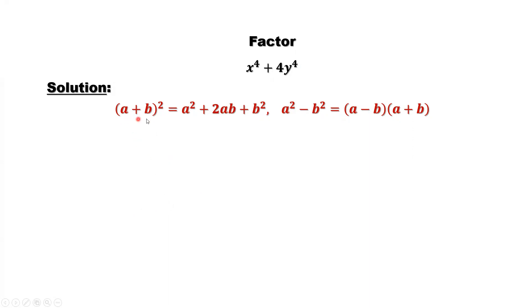The first one is (a + b)^2 equals a^2 plus 2ab plus b^2. Second one, a^2 minus b^2 equals (a minus b)(a plus b). You can see the second one from left to the right, actually you are doing factoring. This one from right to the left, you are doing factoring.